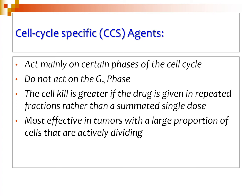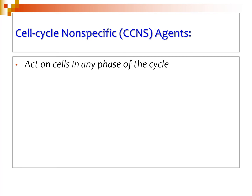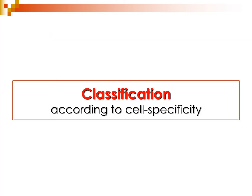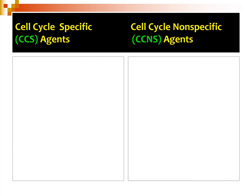For cell cycle specific agents to show activity, cancer cells must be actively dividing. Cell cycle non-specific agents, as the name indicates, can act at any phase of the cell cycle and may even show some effect in the G0 resting phase. They are equally effective in tumors where the growth fraction or mitotic index is even low. So on one hand we have cell cycle specific agents, and on the right side, cell cycle non-specific agents.